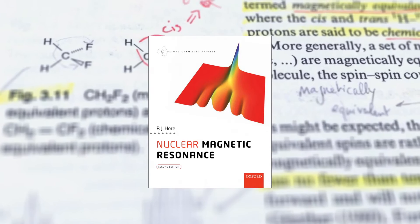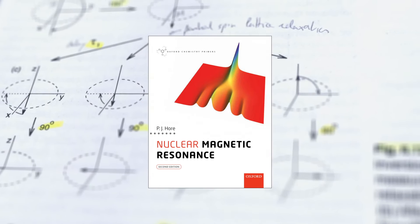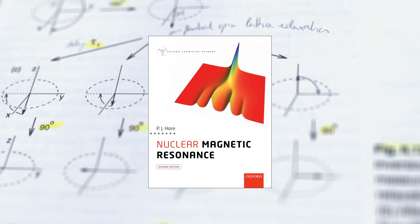This MOOC is based upon the second edition of Nuclear Magnetic Resonance, a little book written by Peter Hoare at Oxford University. In the video lectures, I will be covering the same range of subjects as Peter has in his book, and I will be following the same structure divided into six chapters. I strongly recommend that you get a copy of Peter Hoare's book, as it goes into much greater detail than I am able to do in this MOOC.